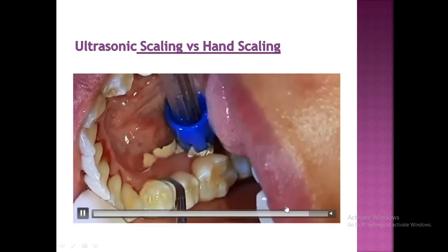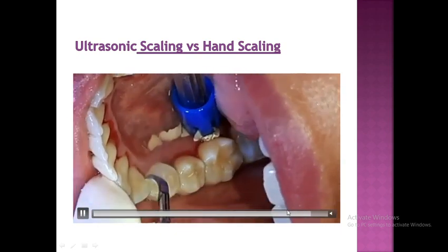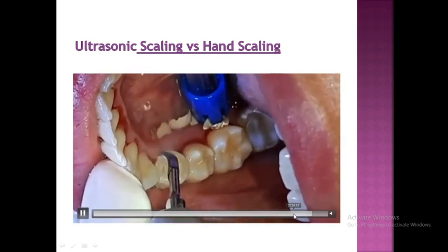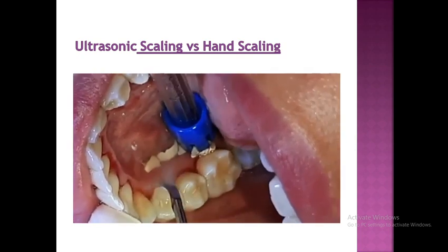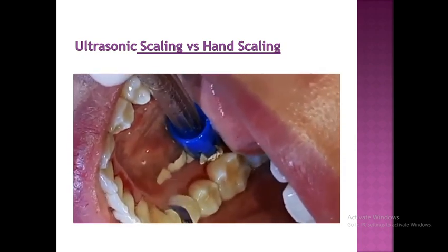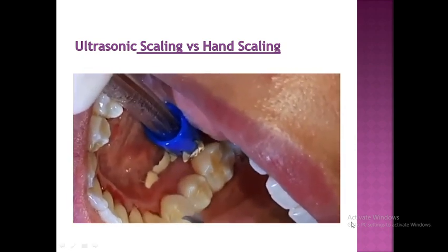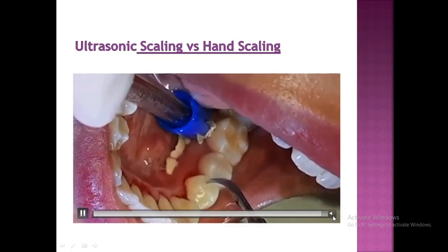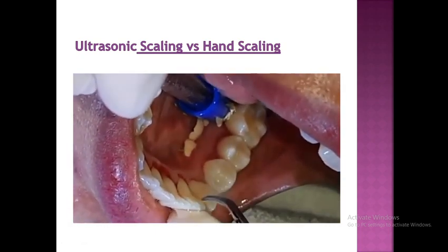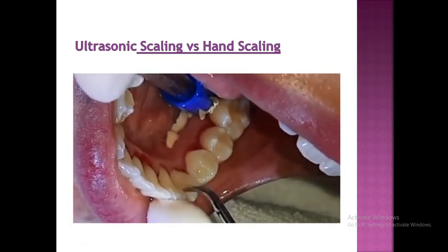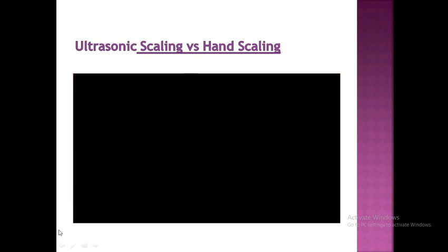To summarize: ultrasonic instrumentation is faster, can be uncomfortable, has more than one action, has a small tip size, and leaves a rough root surface due to limited cementum removal.